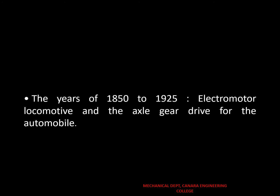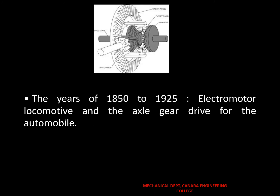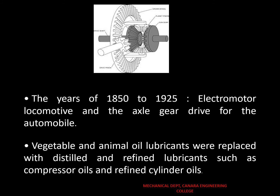The years of 1850 to 1925 saw amazing improvements in machine elements, including the electric motor, locomotives, and axle gear drives for automobiles. Vegetable and animal oil lubricants were replaced with distilled and refined lubricants such as compressor oils and refined cylinder oils.